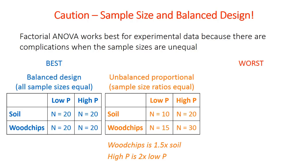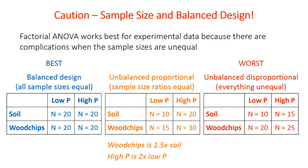If the sample sizes are unequal, the design is called unbalanced. The second-best case is unbalanced but still proportional — sizes are different but there are consistent ratios between factors. For example, wood chips always have 1.5 times as many samples as soil, and high phosphate is always twice as many samples as low phosphate. The worst but probably most common type is the unbalanced and disproportional design, where everything is unequal and there aren't constant ratios.